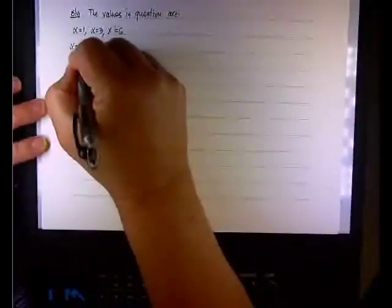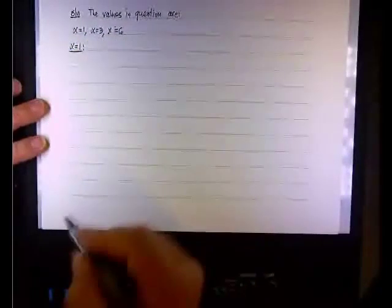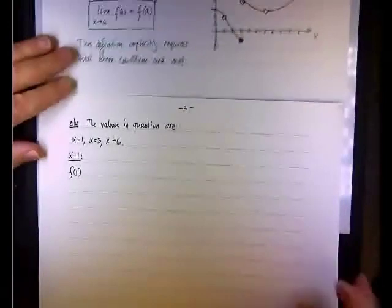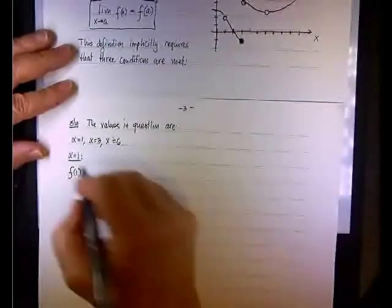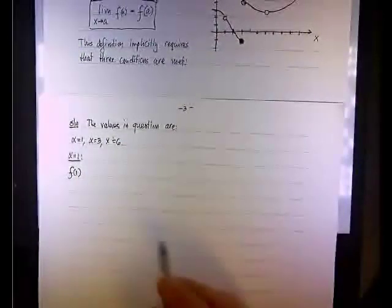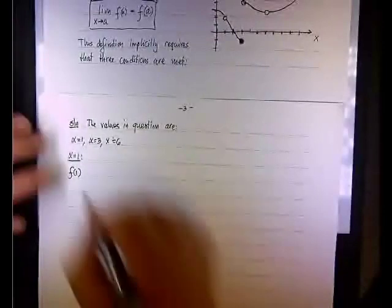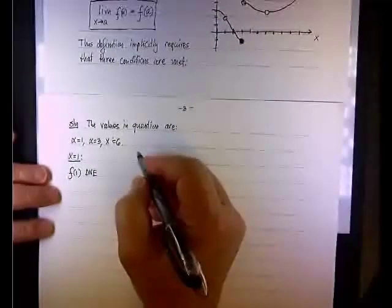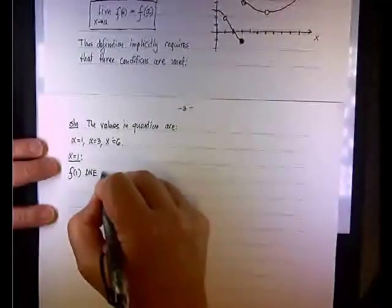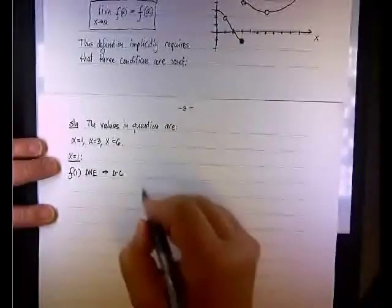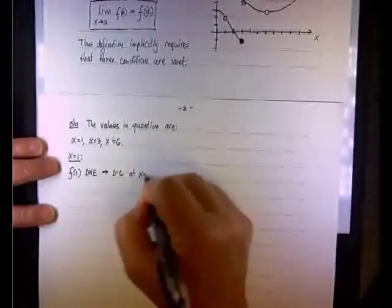So let's look at x equals 1. Are we meeting all three conditions? Condition 1, remember, f(a). So f(1). Let me go and show the graph, so we can decide. Do we meet the first condition? Does f(1) exist at x equals 1? Speak. No. So f(1) does not exist. Okay? So we have discontinuity at x equals 1. So we're going to say, alright, I'll write discontinuity, since it's a long word, I'll write it as dc. So we have dc at x equals 1.